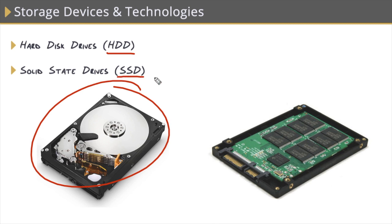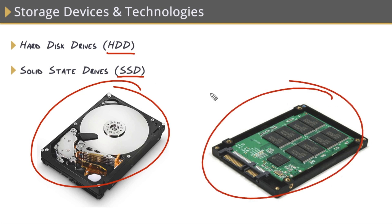On the other side of the equation, we have solid state drives, otherwise known as SSDs. This is flash storage that contains no moving parts whatsoever, as data is stored on microchips. A common configuration you'll see in most desktop and laptop computers today is to use a combination of both. Use an SSD for your system drive that will contain your operating system and any installed programs and applications, so those things boot up instantaneously, and then use an HDD for everything else — all your other files and data. These are also collectively known as locally attached storage.